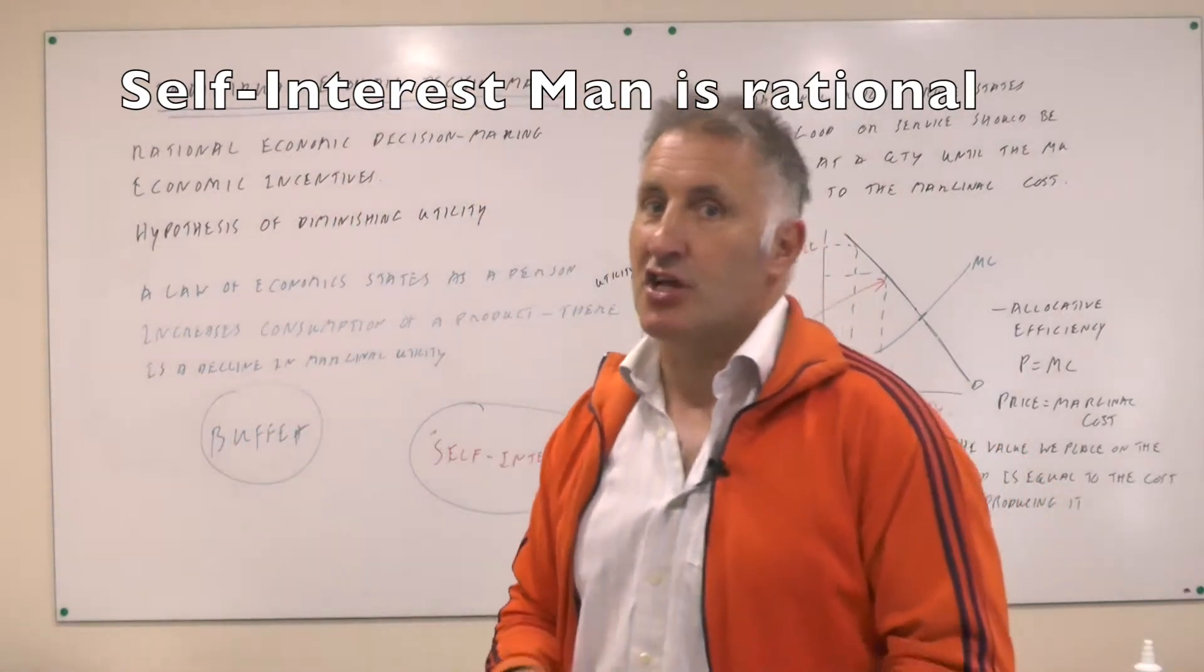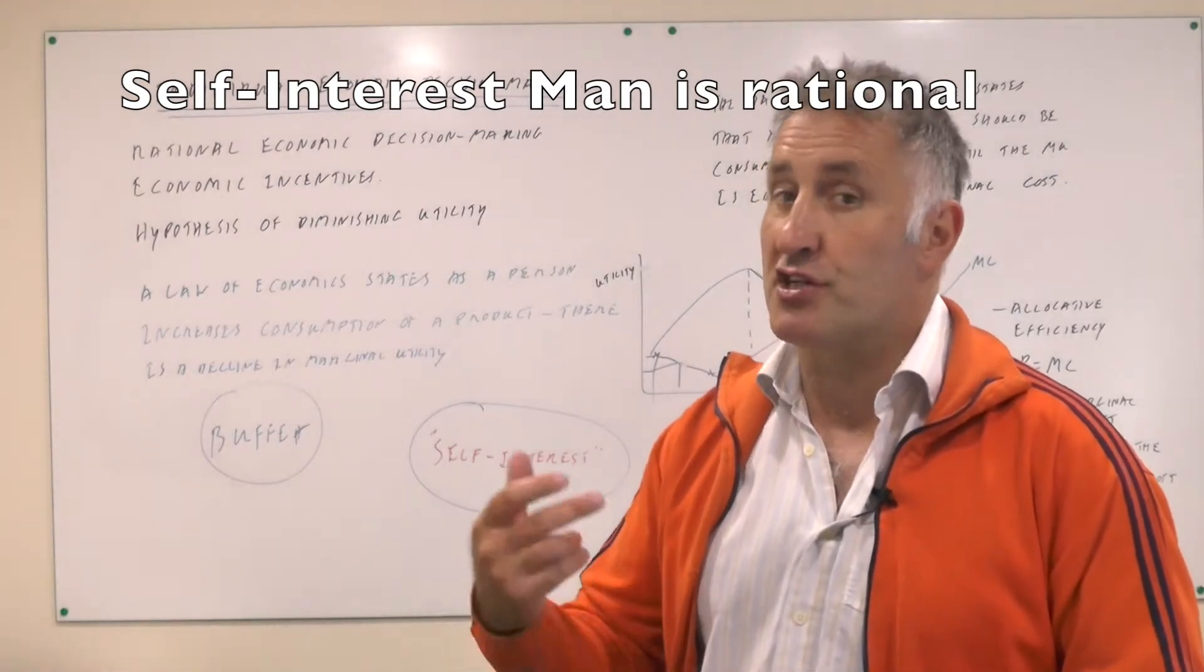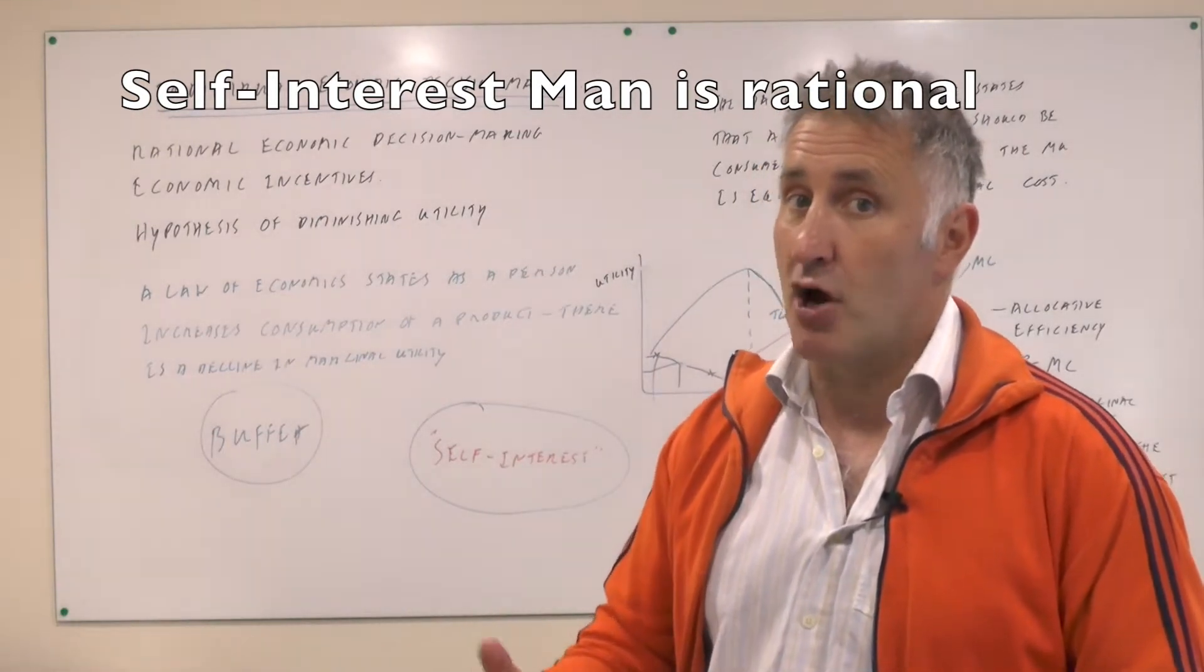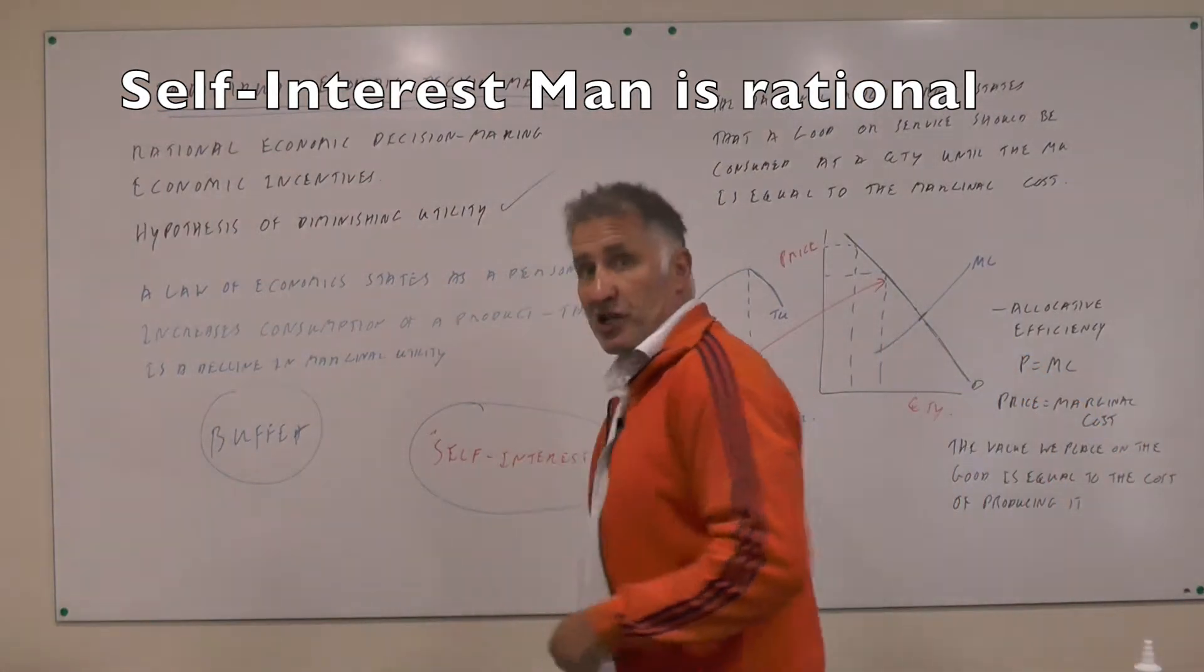What we're now going to look at is the law of diminishing marginal utility, which says that man is a self-interested individual who wants to maximize his or her utility. So this is the hypothesis of diminishing marginal utility.